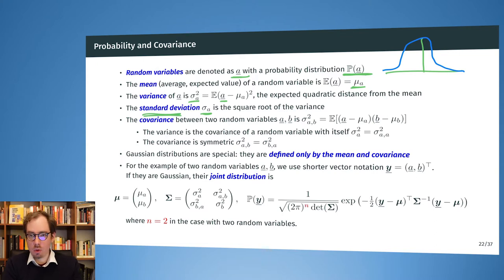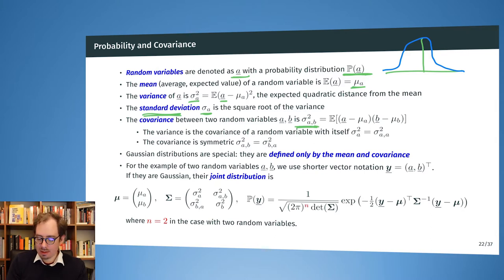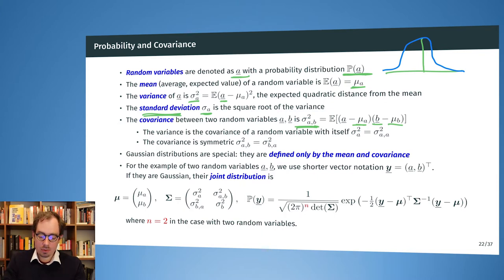In addition to the variance, there is the covariance, which describes how much two random variables are moving together. The covariance sigma²(a,b) is the expected value of (sample_a − mean_a)(sample_b − mean_b). The variance is just the covariance of a random variable with itself, and the covariance is symmetric: covariance(a,b) equals covariance(b,a).